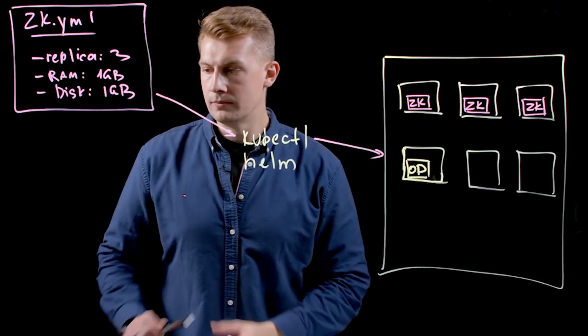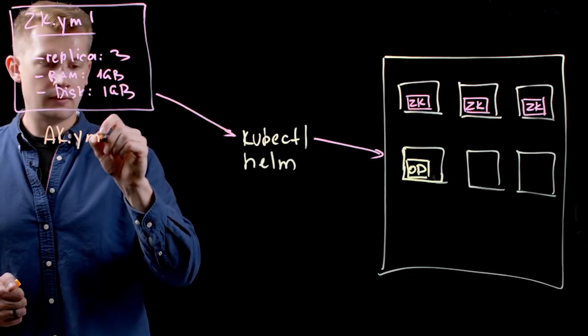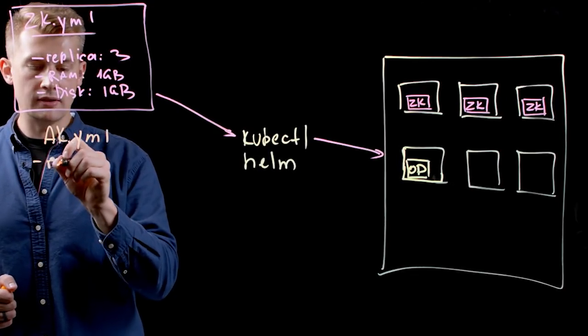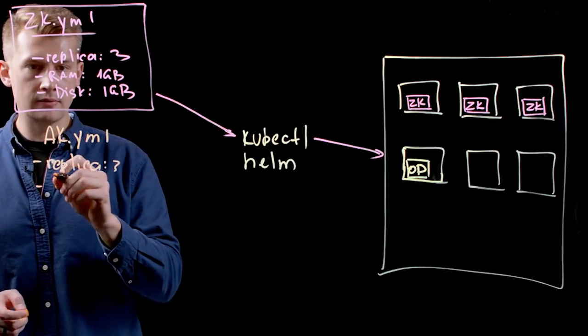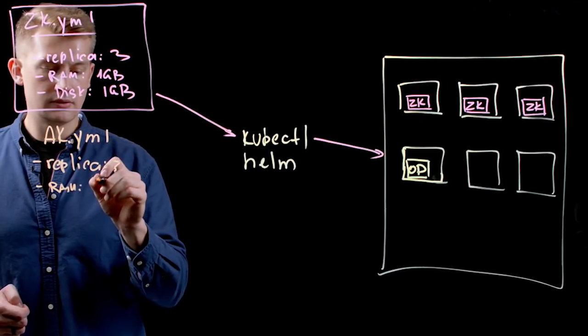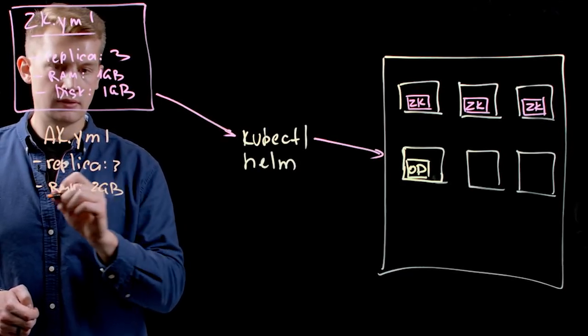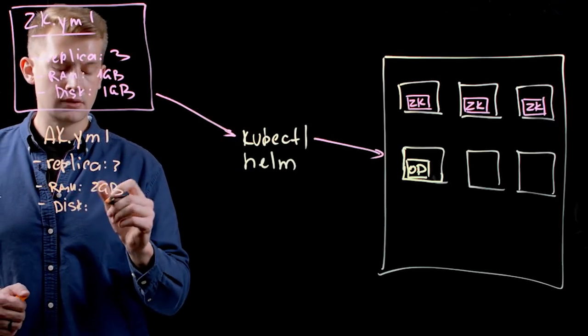Same thing for Kafka. You just only say replica count. You can say how much RAM you want to give each and how much disk you want to give to each broker.